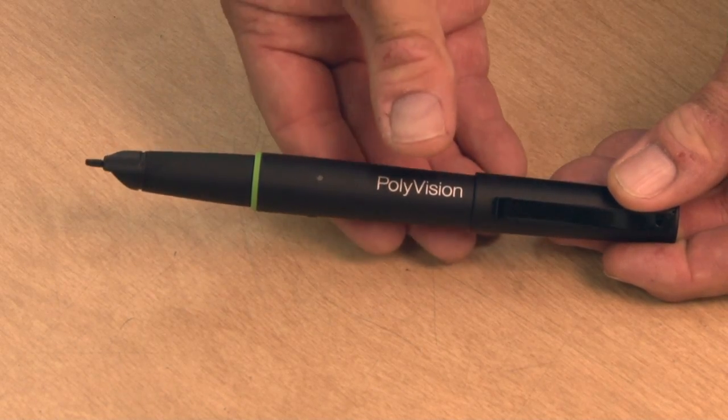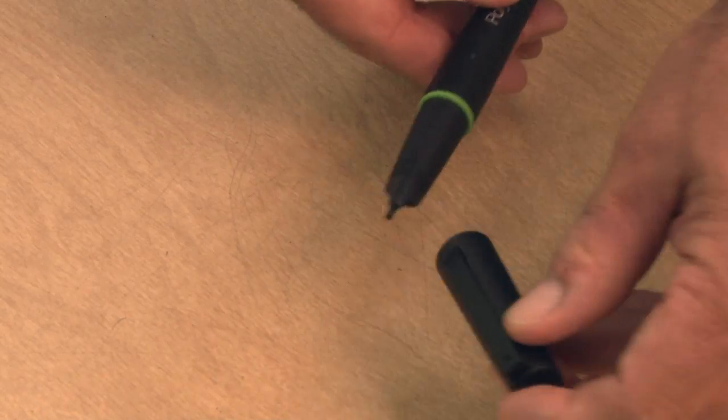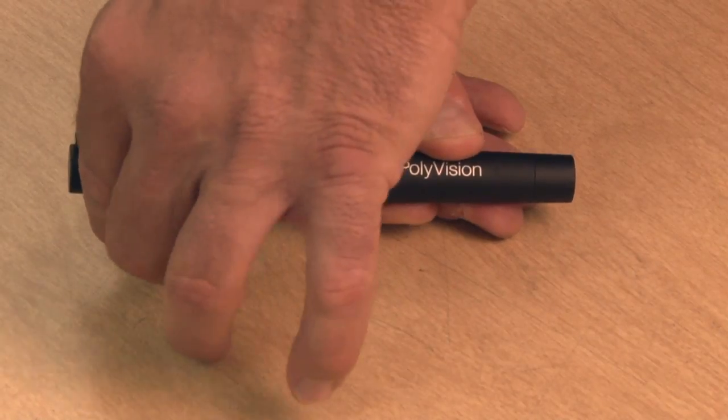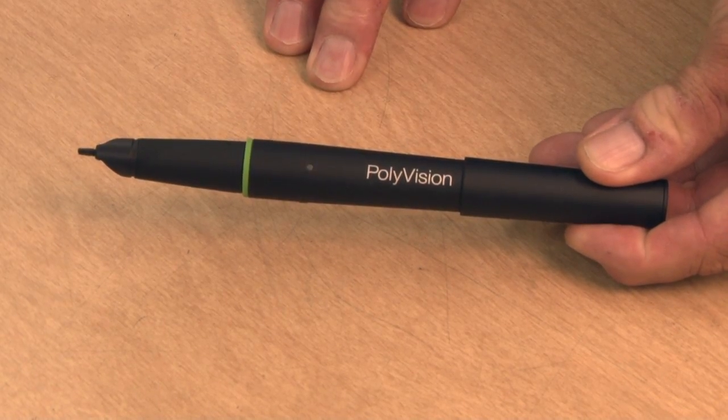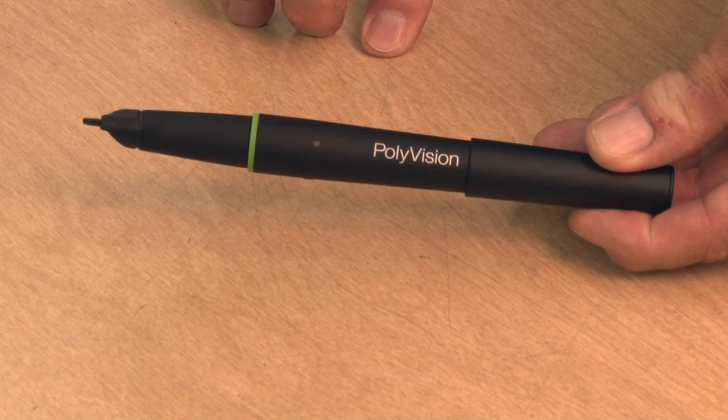If that happens and you go to the board and the stylus does not respond, cap the stylus, wait about a second or two, uncap it again. Green light will come on. It will reestablish connection. Again once the light turns off the stylus is ready to go.